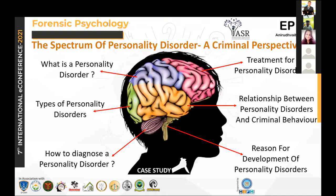Second comes the Cluster B personality disorders, which are of emotional and impulsive type. The first under this category is antisocial personality disorder, in which the person is aggressive and often has violent behavior, exhibits impulsive behavior, is consistently irresponsible, and persistently lies, steals, and cons others.